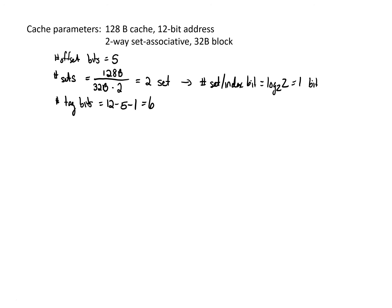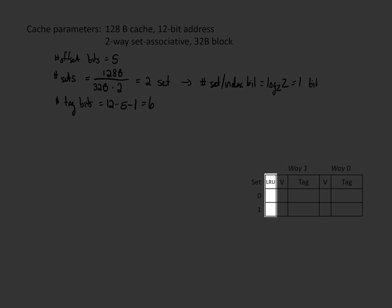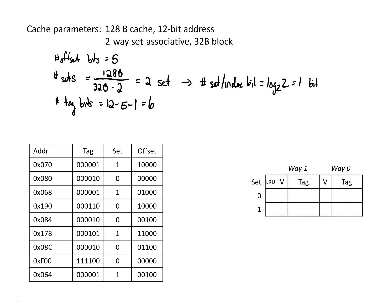We now want to look at what our cache looks like in this configuration. Since there are only two sets, our model only shows two rows. Since this has two ways, each row needs to have two ways, and so each entry has two ways along with the tag bits for each way. We're also showing a column indicating which of the two ways was least recently used, so we know what way to replace if needed. We're going to look at the same set of accesses as we had in the first case, for the first time through and a second time through this series of addresses.